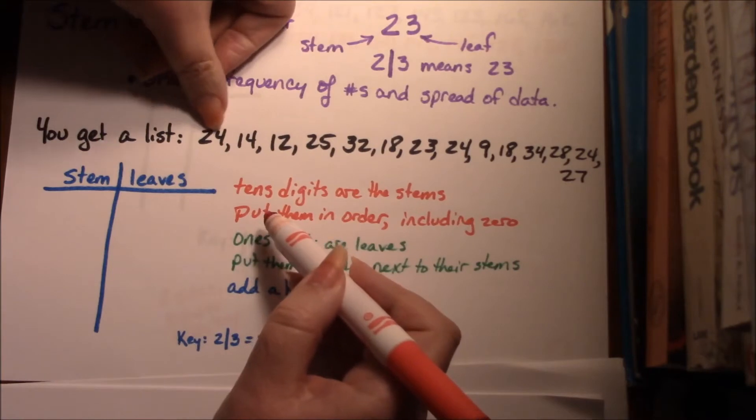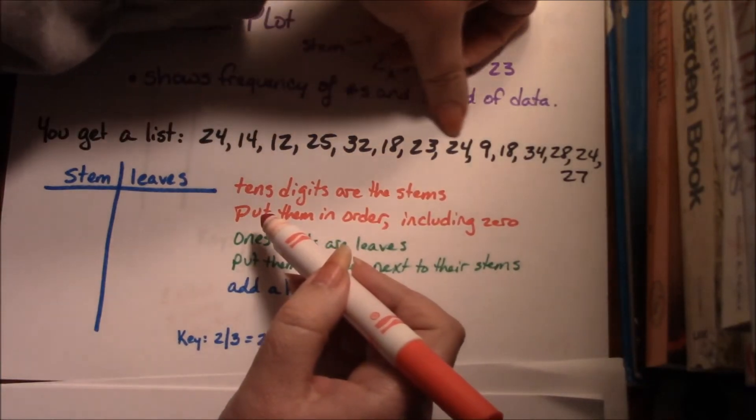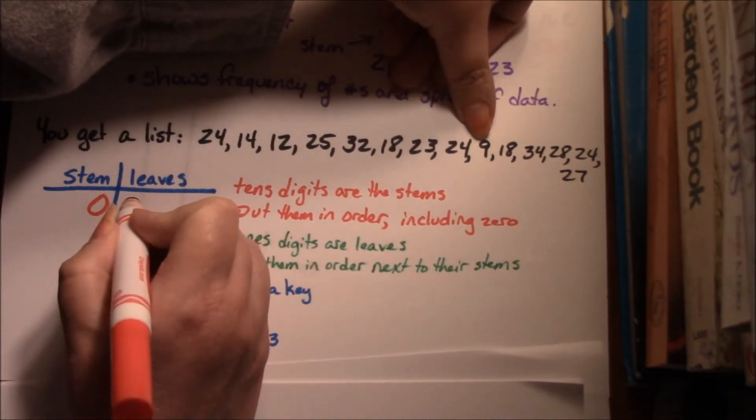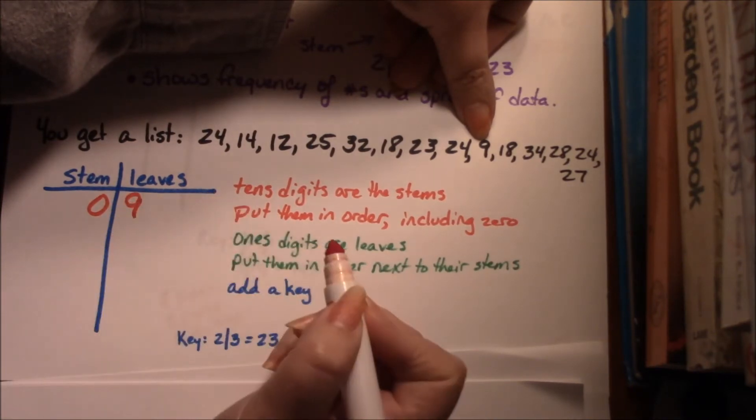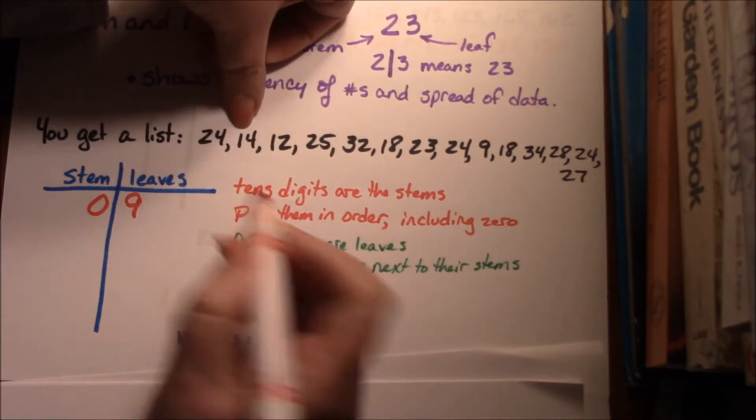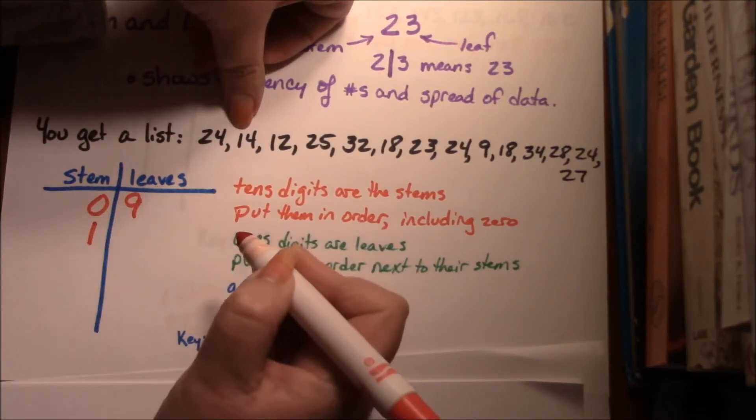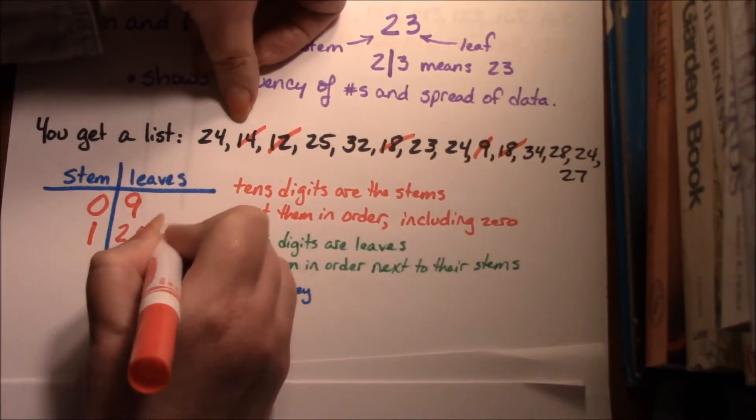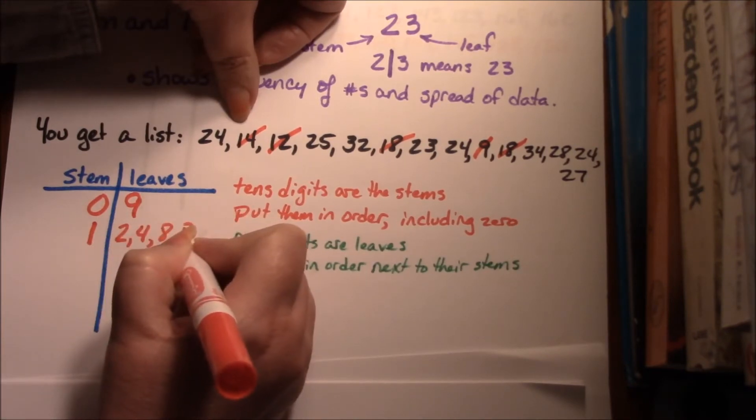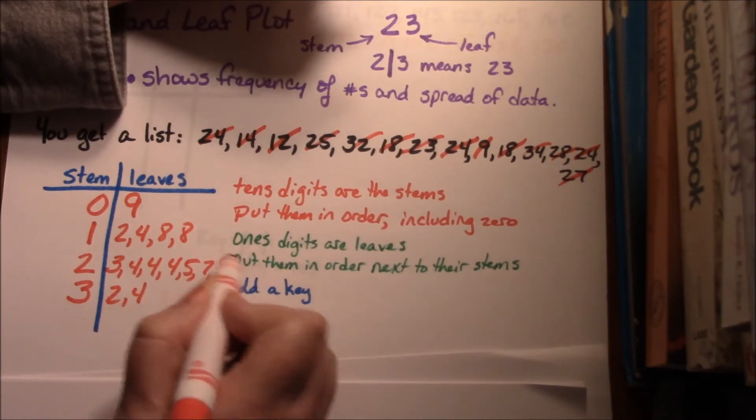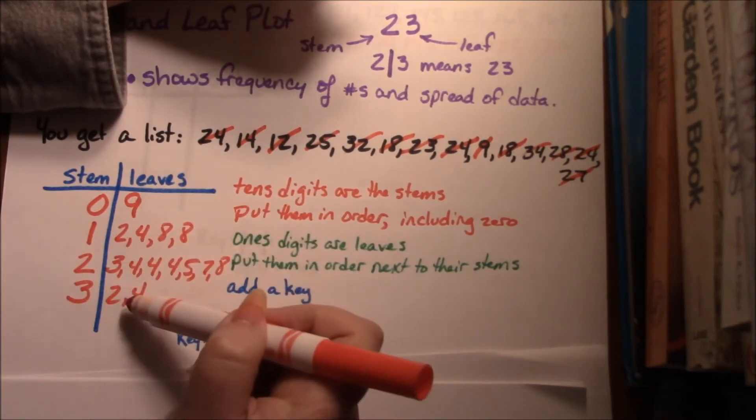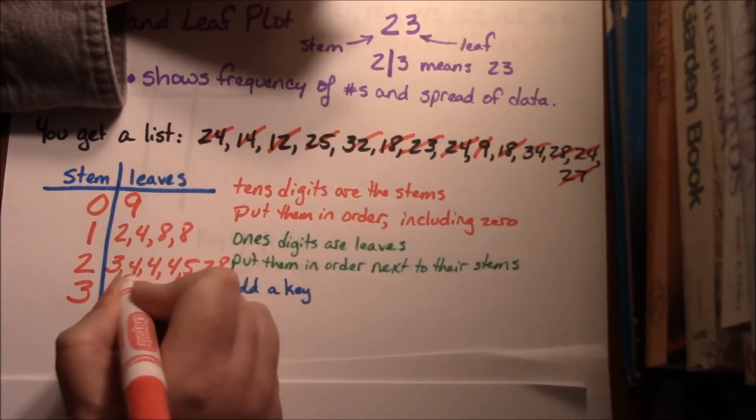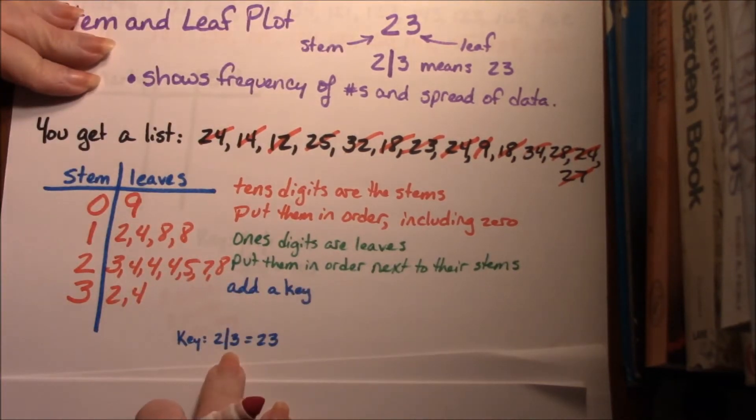We're going to go through this and look for the lowest tens digit that we have. Here we have a 9, which is a 0 in the 10 spot, and it's the only one. Then we have a bunch of tens, and we're going to list them in order. So I'm going to cross that out: 2 and 4 and 8 and 8. These are in numerical order. Now it shows us that there are a whole bunch of twenties and not a bunch on the lower or upper end. We can see that there are a bunch of 24s.